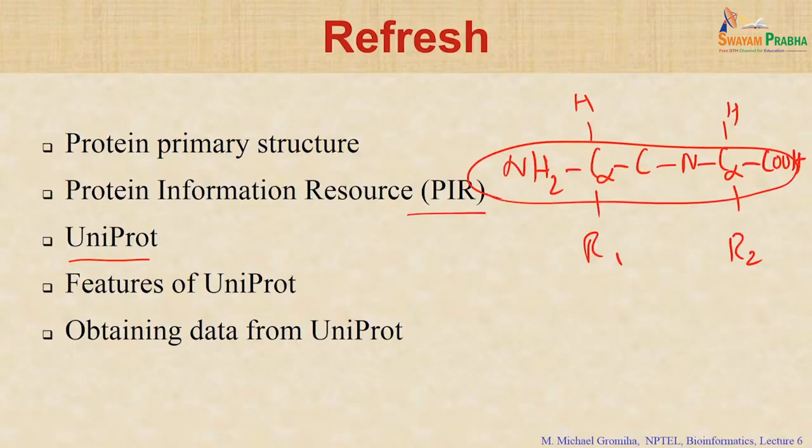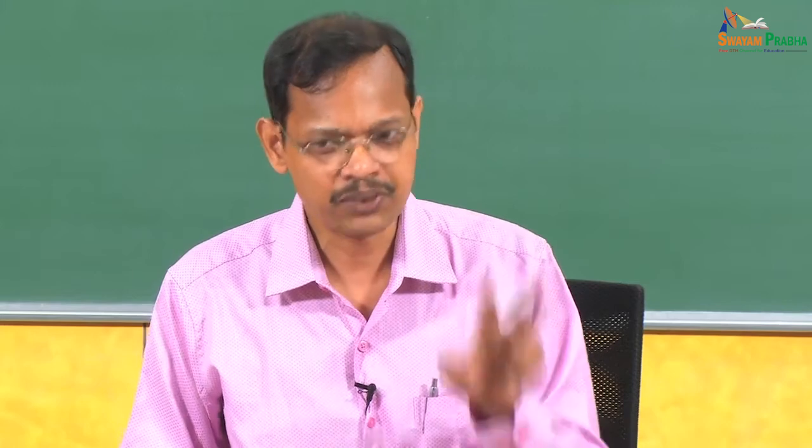To obtain data from UniProt — for example, if you want data for transcription factors — go to UniProt and use the search option for transcription factors. You will get a list of sequences. If you want to remove redundancy, you can select options available in UniProt: 100 percent, 90 percent, or 50 percent, and download the data. If you are interested in a specific protein, such as hemoglobin, you can search for it and get the sequence, function, post-translational modification sites, and binding sites — all from UniProt.